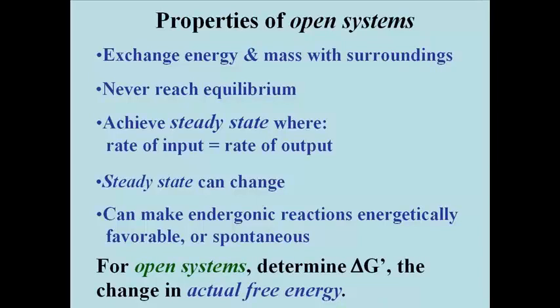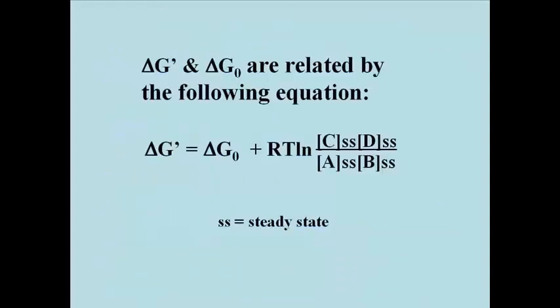For open systems, we will measure delta G prime, the change in actual free energy. Delta G prime, the change in actual free energy, and delta G zero, the standard free energy change in a closed system, are related by the following equation.